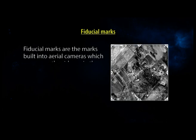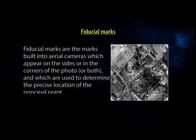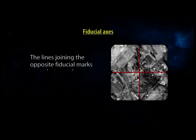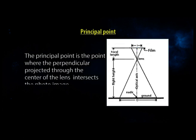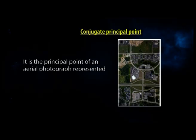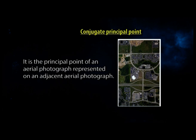Geometrical elements of aerial photographs. Number 1: fiducial marks — marks built into aerial cameras appearing on the sides or corners of the photo, used to determine the precise location of the photograph. Number 2: fiducial axis — the lines joining opposite fiducial marks on a photograph. Number 3: principal point — the point where the perpendicular projected through the center of the lens intersects the photo image. Number 4: conjugate principal point — the principal point of an aerial photograph represented on an adjacent aerial photograph.